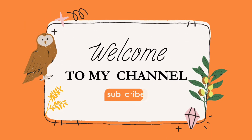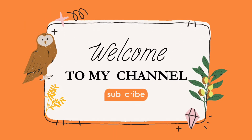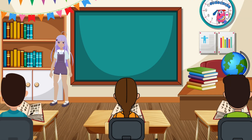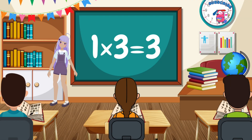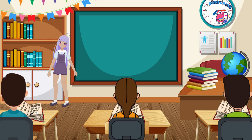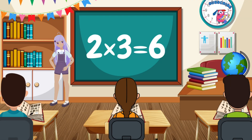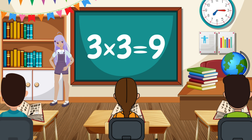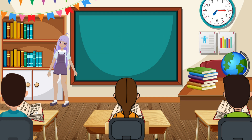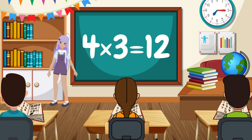Hello friends, welcome to a new Ping Ping video. Today we're going to learn the three times table. 1 multiplied by 3 equals 3. 2 multiplied by 3 equals 6.